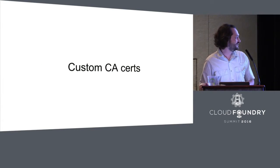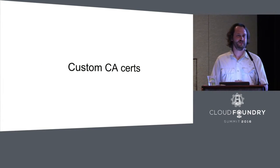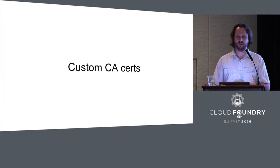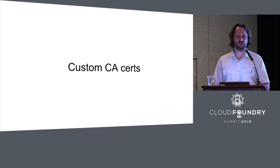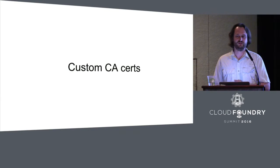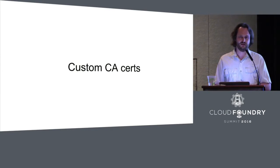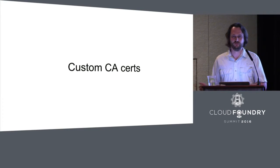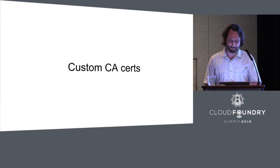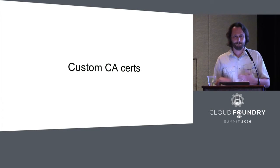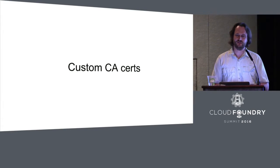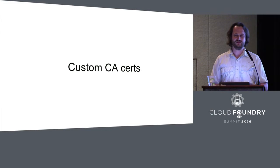The last feature we worked on was about custom CA certs. Think about a private OpenStack installation using self-signed certificates — you might still want to use SSL validation, and that's a mechanism to provide your custom CA cert. That was pretty straightforward again, like Keystone v3. The pipeline was green. It just didn't work.